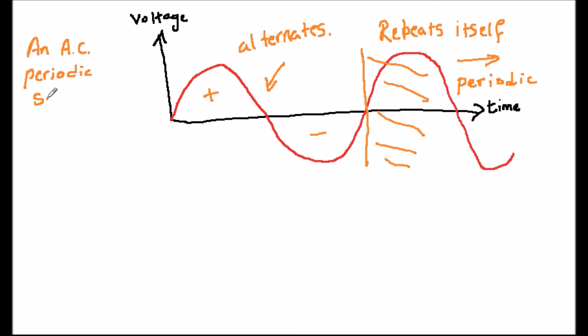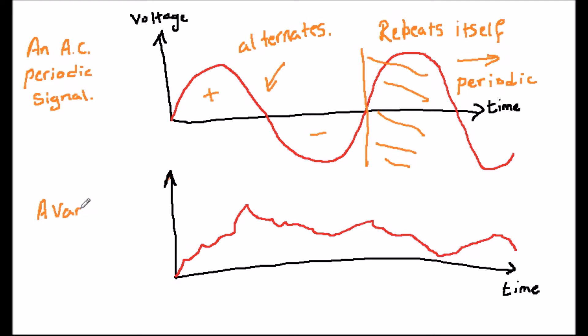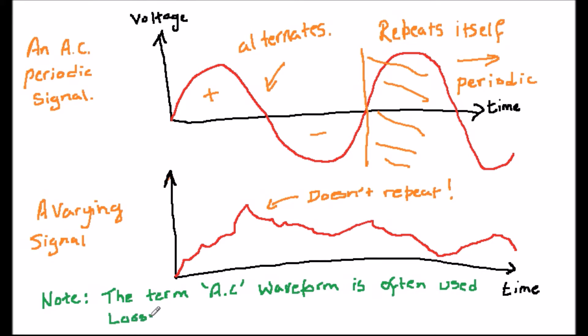The other system we looked at which varies with time was the signal coming from a microphone. This is a varying signal but it's not periodic like the generator signal we saw above. It's called aperiodic and also it's not really AC because it doesn't alternate between positive and negative. So we're best just calling it a time varying signal.